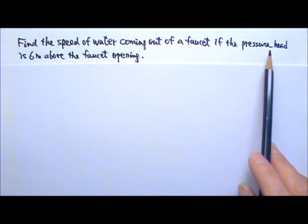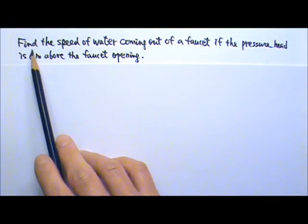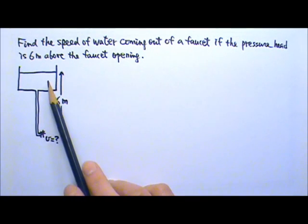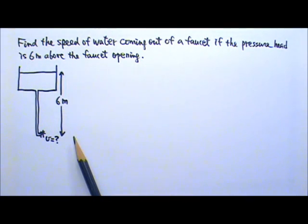In this problem, the pressure head being 6 meters high means the water basically comes from a water tower that is 6 meters high. Another common way to provide pressure head for a faucet is to use a pump. We will talk about that kind of problem in another video. Now see if you can find the speed of the water coming out of the faucet.